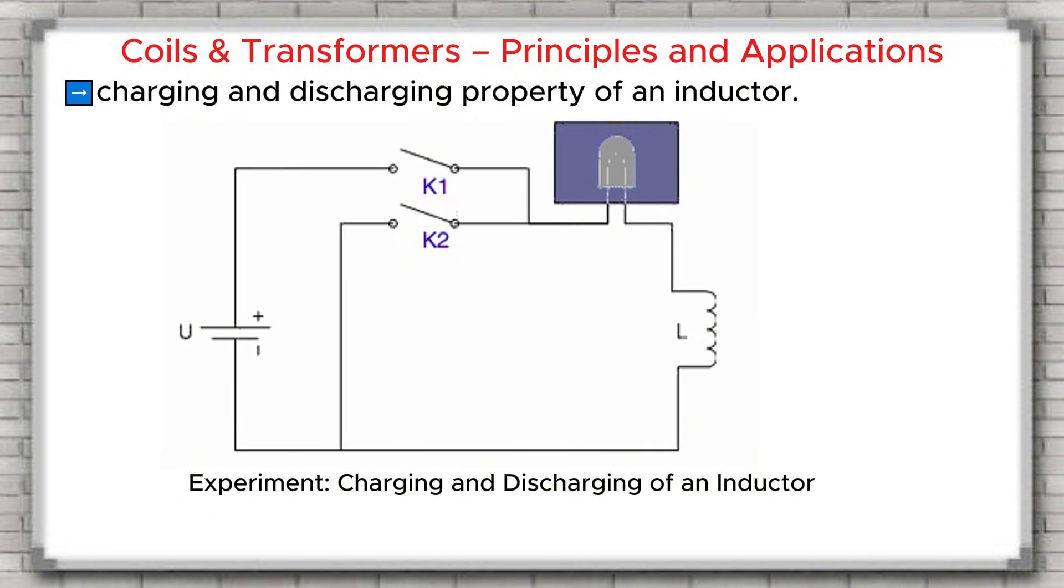Let's observe a small experiment to demonstrate the charging and discharging property of an inductor. In this experiment, when switch K1 is closed, current begins to flow through the coil. Because the coil creates inductive reactance, it resists any sudden increase of current. Therefore, the current does not rise instantly, but increases gradually. As a result, the lightbulb lights up slowly. Next, when K1 is opened and K2 is closed, the energy that was stored inside the coil is immediately released. This energy creates a reverse-induced voltage, which passes through the bulb, making the lightbulb flash for a moment. This is the phenomenon of the inductor discharging.